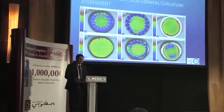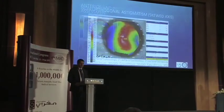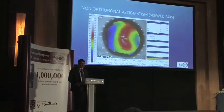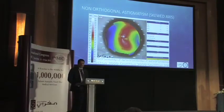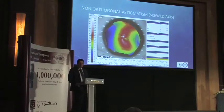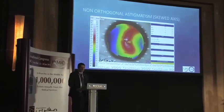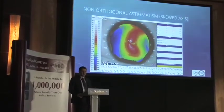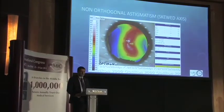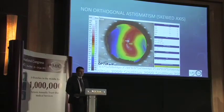But look at this case where the anterior and posterior curvature show a different axis of astigmatism, which means you don't really know where the final astigmatism is going to be. In these cases you may want to consider just waiting and maybe doing a laser procedure later. Here is another example: non-orthogonal astigmatism with the two main axes skewed — a toric IOL may not correct adequately, so you may want to plan a secondary procedure.